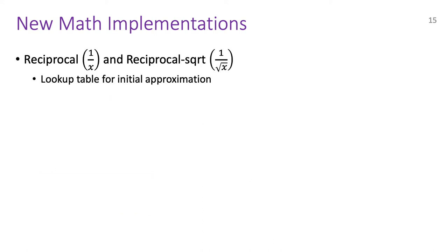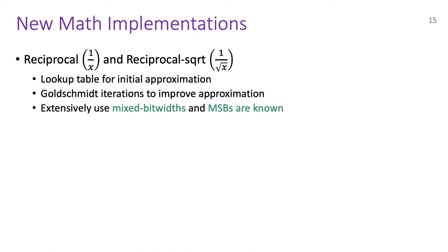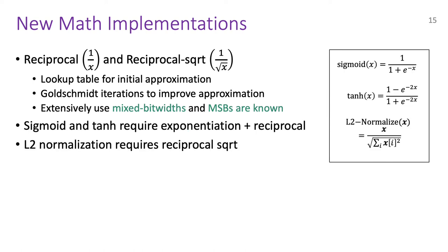After exponentiation, we have reciprocal and reciprocal of square root which we evaluate with the following strategy. First, we use a lookup table to get an initial approximation of the output and then we use Goldschmidt iterations to iteratively improve upon that approximation. Here, we again extensively use mixed bit widths, varying scales and ensure that MSBs of all the intermediates are known. Moving on to the next level, we have sigmoid tanh and L2 normalization. They are easy to implement given our building blocks and functionalities for exponentiation, reciprocal and reciprocal square root, as is evident from their formulas.